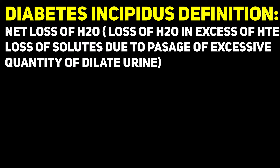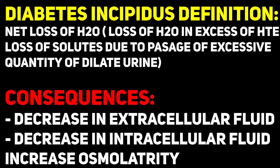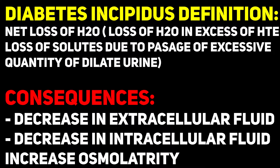Diabetes insipidus is the net loss of water. It is due to excess loss of solutes through the passage of large quantities of dilute urine. This essentially leads to decreased extracellular fluid, decreased intracellular fluid, and increased osmolarity. Basically, it means the loss of solute — and as we know, water loves to follow salts — so where there is loss of salt, there will be loss of water, making your urine very diluted.